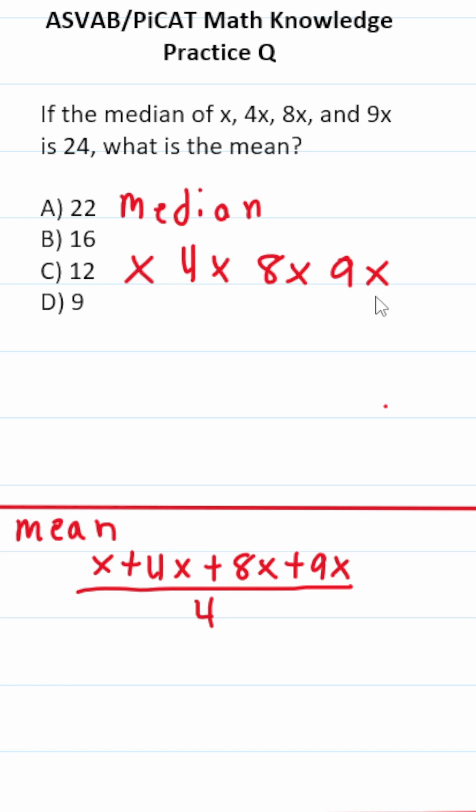So to find the median, you arrange the terms from least to greatest. You cross them out, one at each end, to get to the middle term, or the middle two terms.